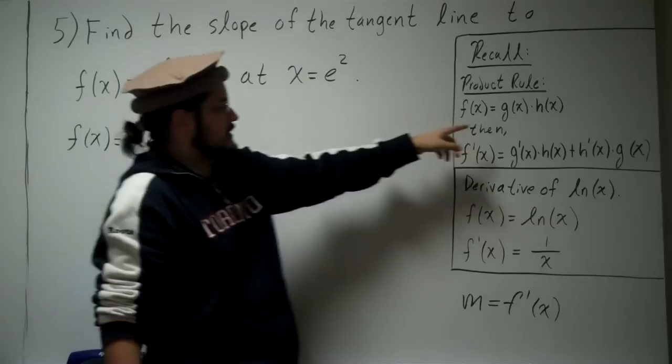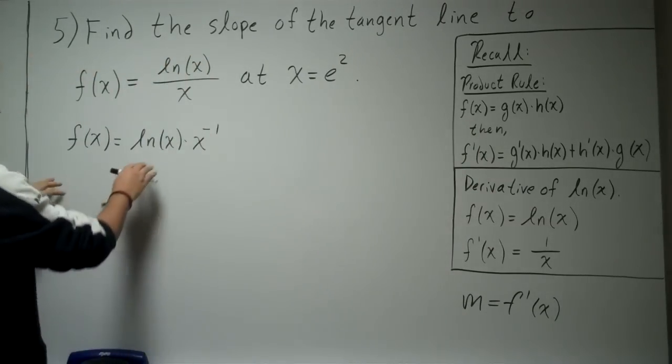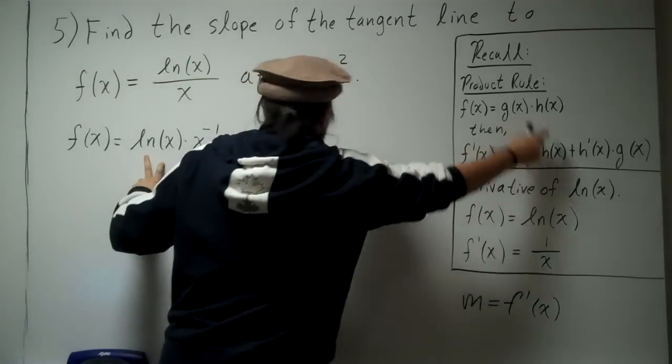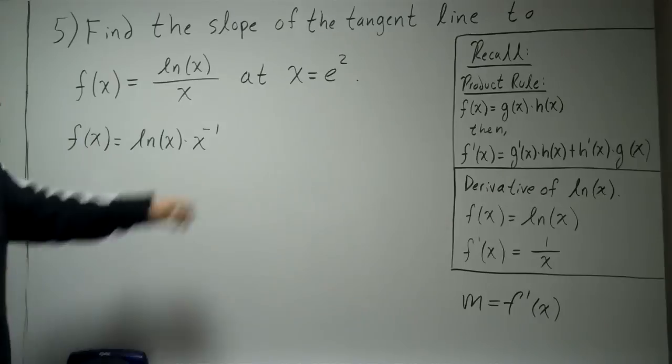So that's where the product rule comes in. So, if you want to look at it, g(x) is our ln(x), and h(x) is our x to the negative one.